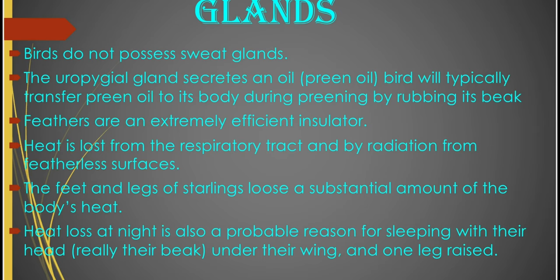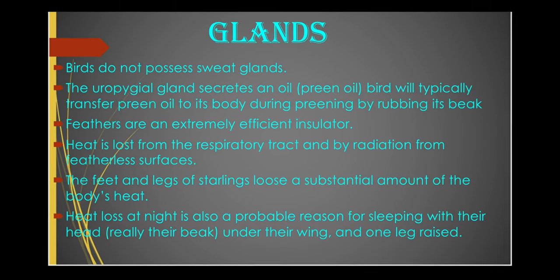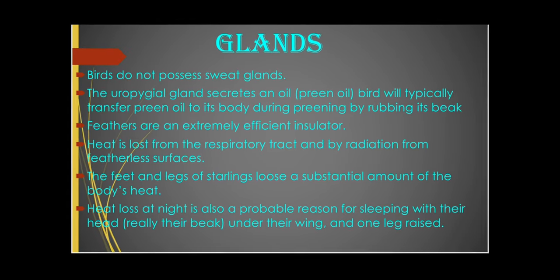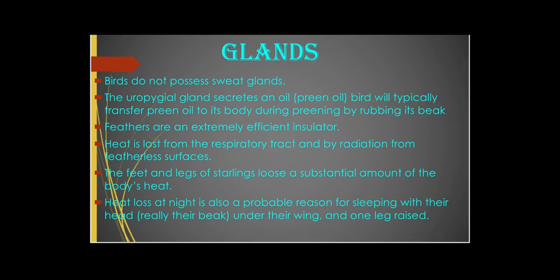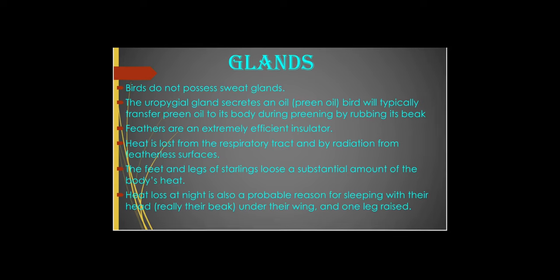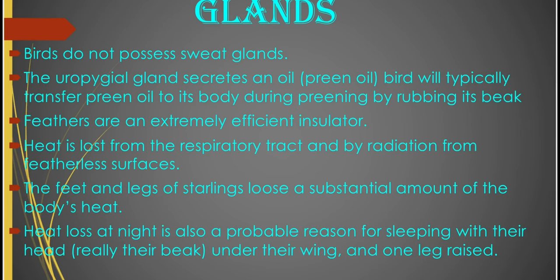The birds also have glands. The birds do not possess sweat glands. The uropygial glands secrete an oil — that's the preen oil. The bird will usually transfer the preen oil to its body during preening by rubbing its beak. So when you see the bird rubbing the beak at the base of the tail, it's stimulating the uropygial gland to release the preen oil, which is then transferred to the body.